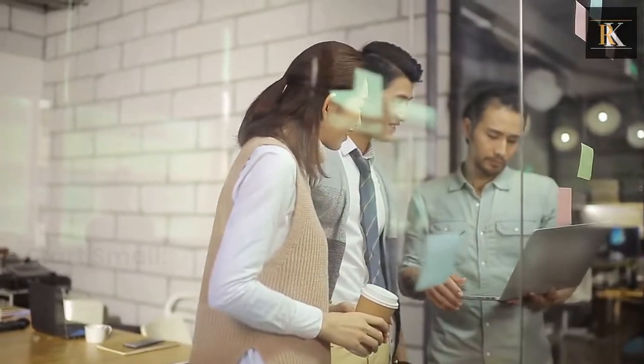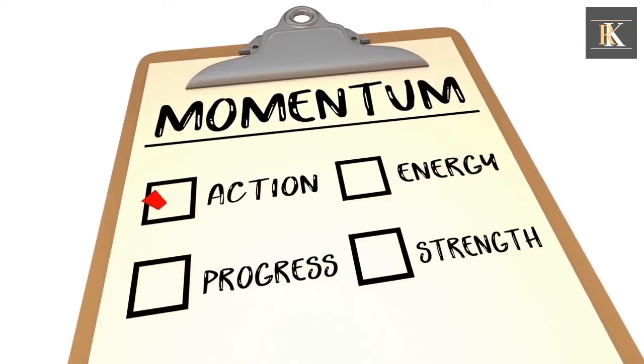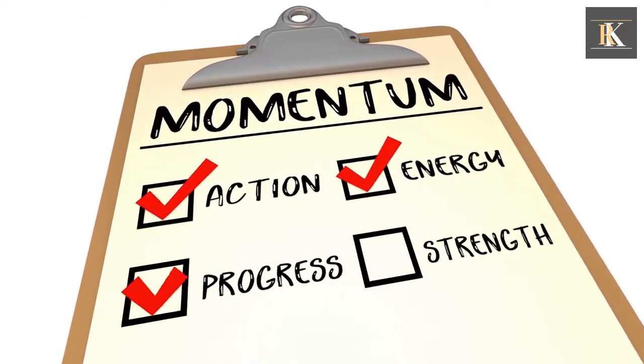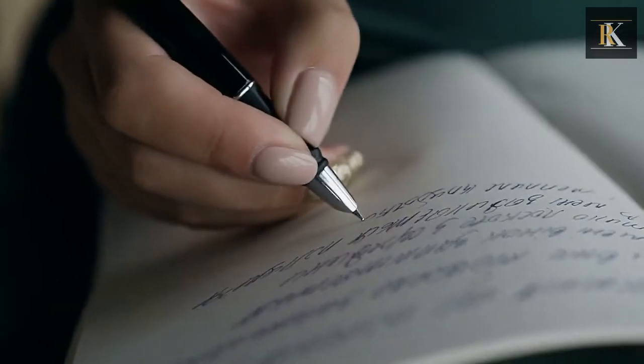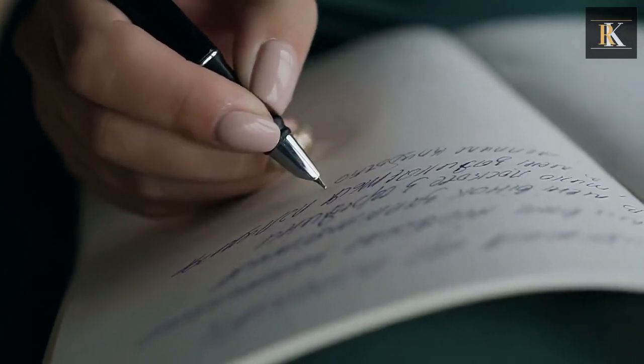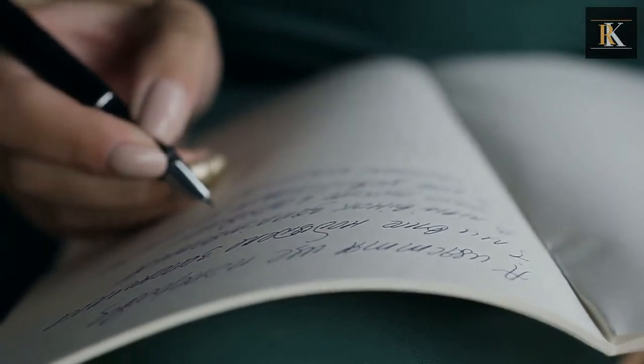Start small. Habits take time to develop, so start with small actions and build momentum. If you want to develop a habit of meditating, start with just 2 to 3 minutes a day and gradually increase the time. If you want to develop a habit of writing, start with writing for just 5 to 10 minutes a day.